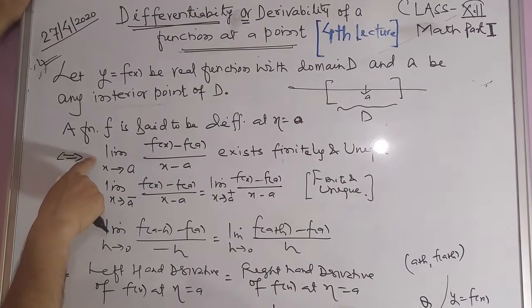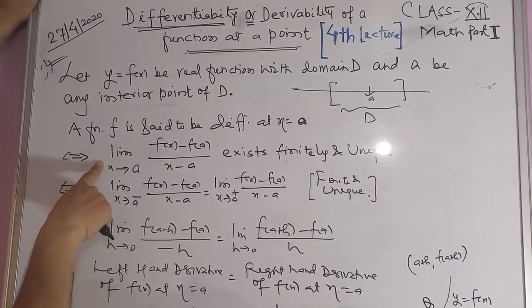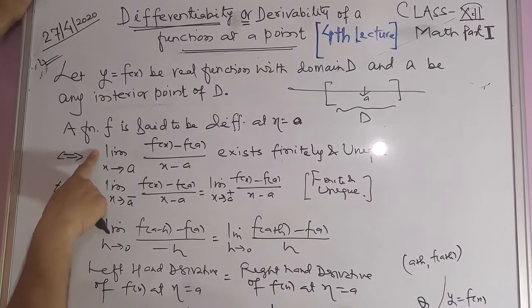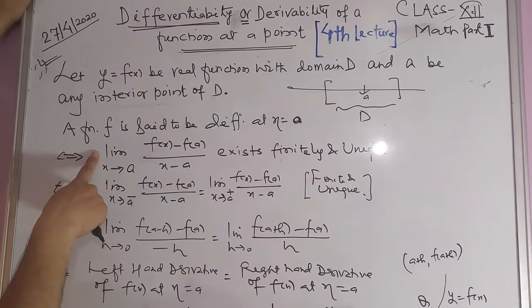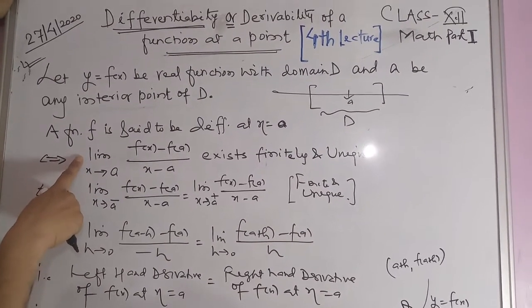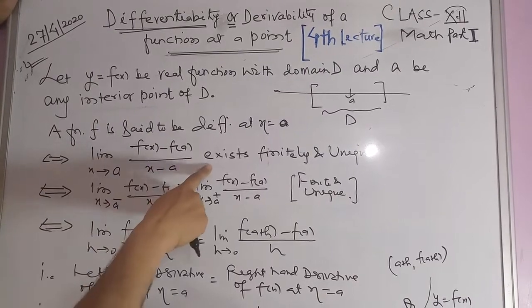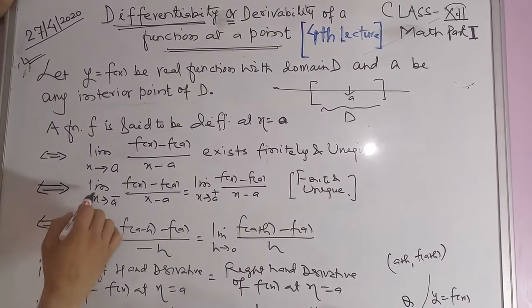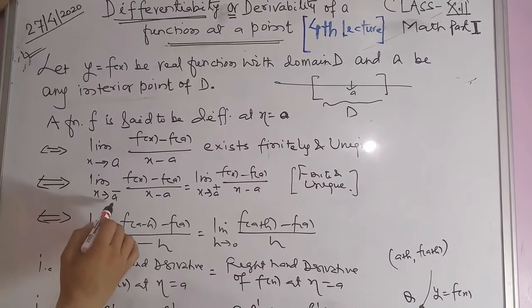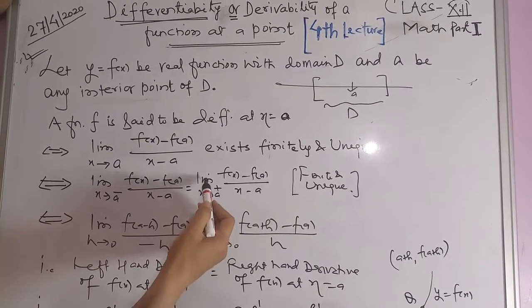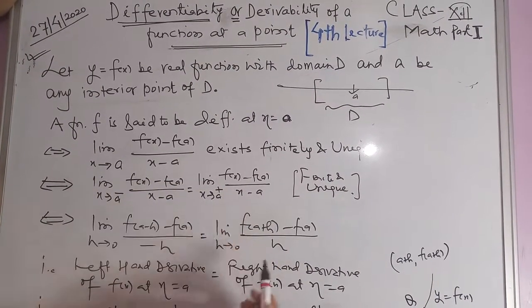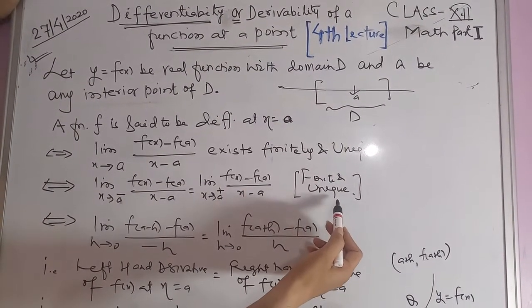For existence of limit, we need the left-hand limit as x tends to a minus of [f(x) minus f(a)] upon [x minus a], and the right-hand limit as x tends to a plus of [f(x) minus f(a)] upon [x minus a], to both be finite and unique.